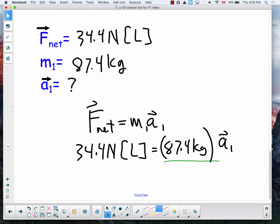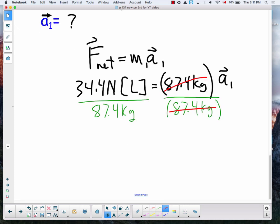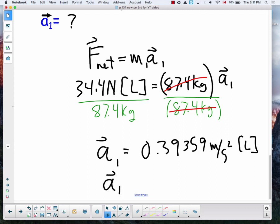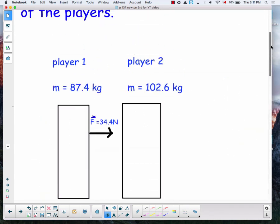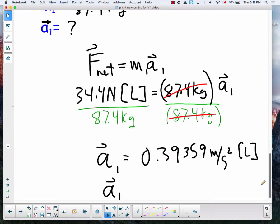So now we're doing just some math. We want to divide both sides by 87.4 kilograms, and when we do that we get the 87.4 kilograms cancelling on the right hand side. We are left with 34.4 divided by 87.4, which will give us an acceleration. But if we look at the beginning question at the top, we have three sig digs, three sig digs, so this can only go to three significant digits, which would be 0.394 meters per second squared towards the left.